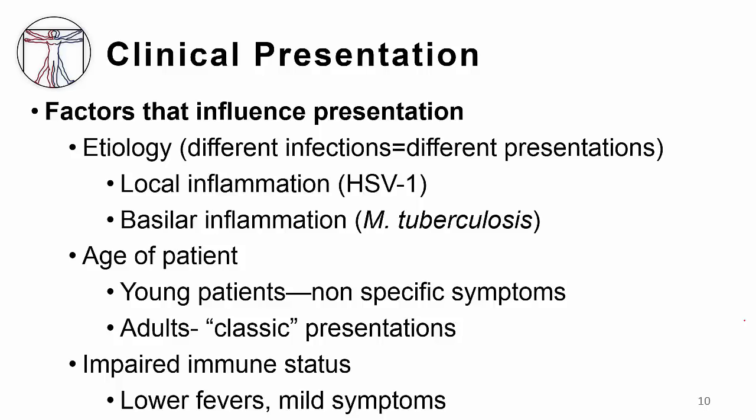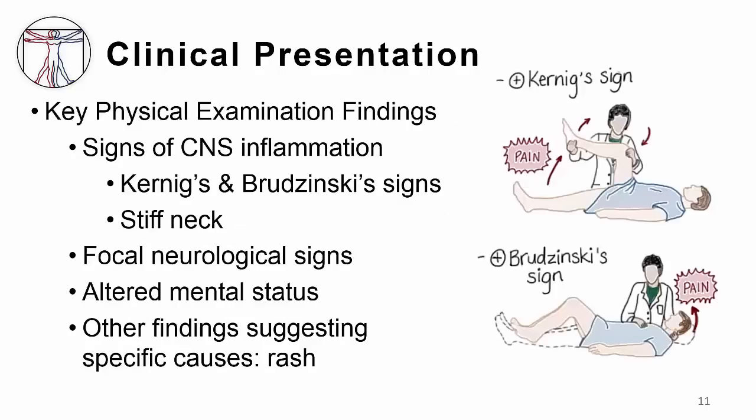The age of the patient matters. Young patients often present with nonspecific symptoms — only fever and lethargy — while adults present with more classic presentations as outlined above. An impaired immune status is also going to change the way the patient comes in. They may have lower fever, mild symptoms, or may have overwhelming infection if they are severely immunocompromised.